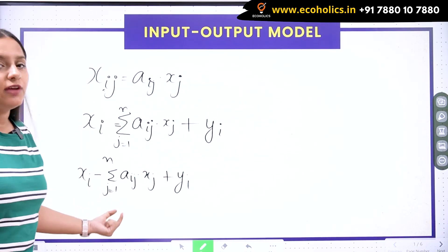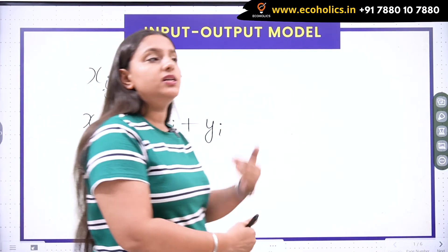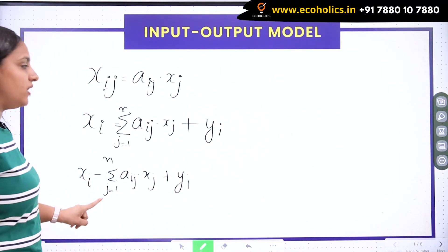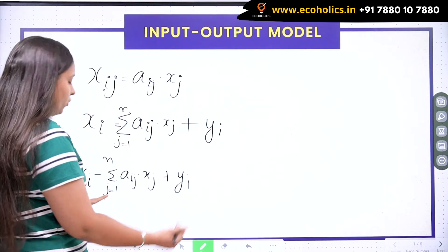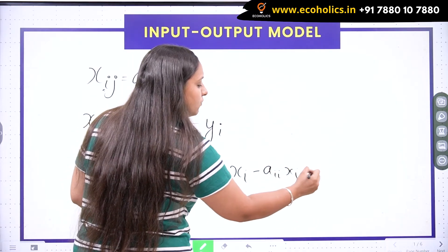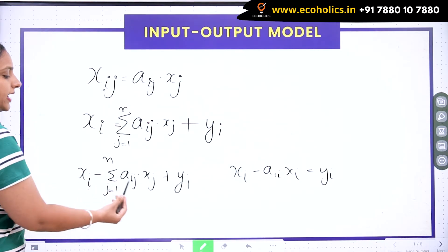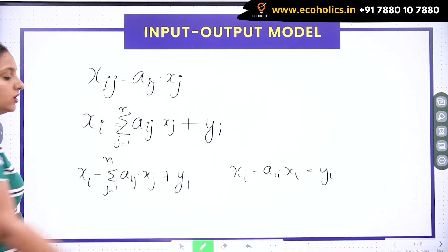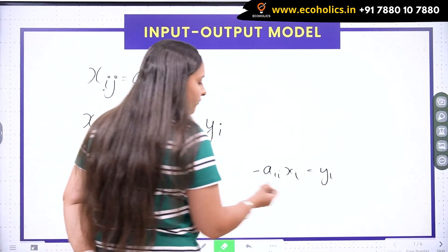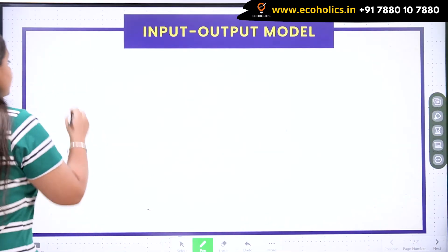Since j takes values from 1 to n, there will be a point where j equals i. Whenever j equals i, I get xi minus aii·xi equals yi. Now I need to write this in matrix formulation, so let's move to the next slide. We have the equation xi minus summation of aij·xj equals yi, where j goes from 1 to n.